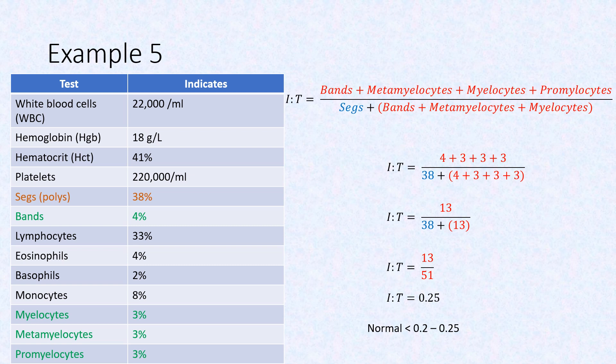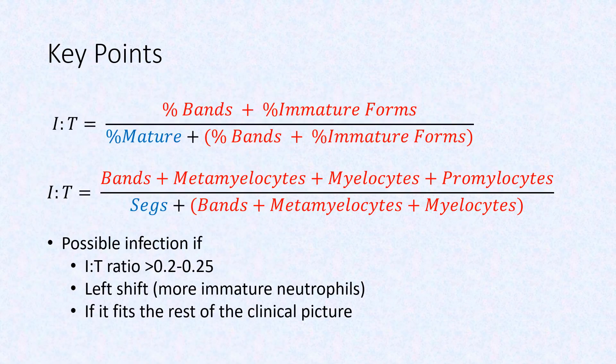Recall that a normal IT ratio is less than 0.2 to 0.25, so this is borderline and should utilize other assessment findings. The key points to remember are the formula and that the presence of more immature neutrophils is suggestive of an infection. This is also referred to as a left shift.